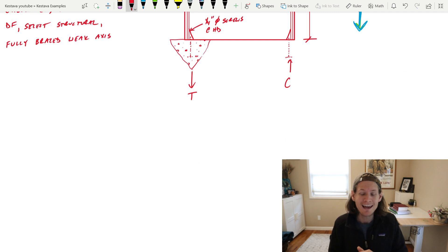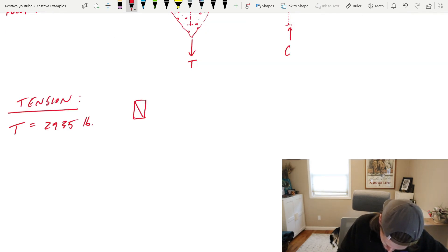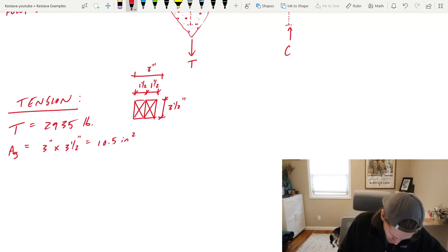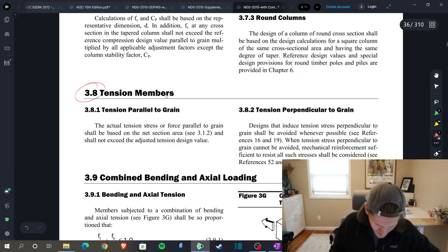So those studs are really locked in from ever really being able to bend about their weak axis. But in the strong axis direction, they are fully unbraced. So we're going to need to pay attention to that as we move forward here. Our tension and equivalent compressive force is just a hair under 3000 pounds. And we need to check today to make sure that our posts are sized adequately. Let's start with tension. Let's call out T again, 2935 pounds.